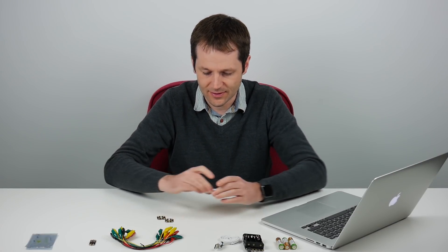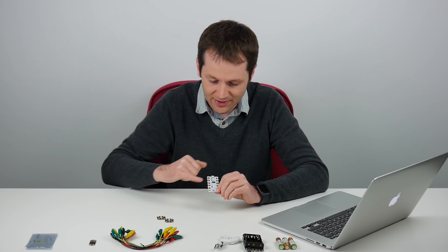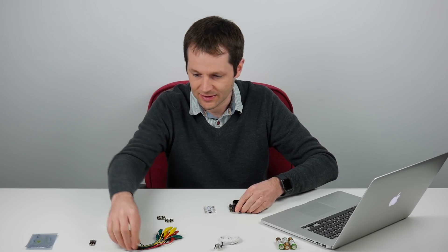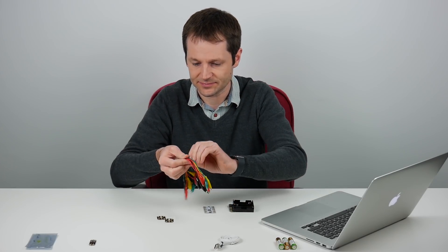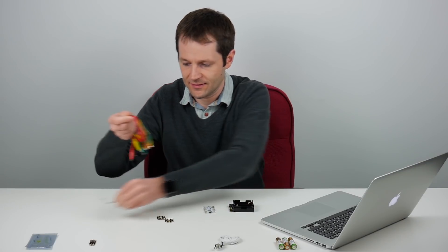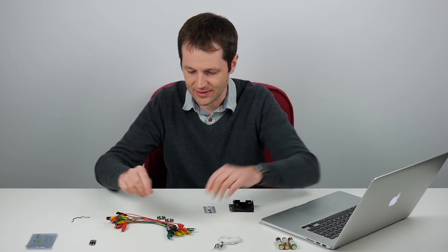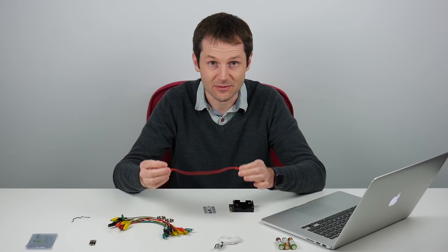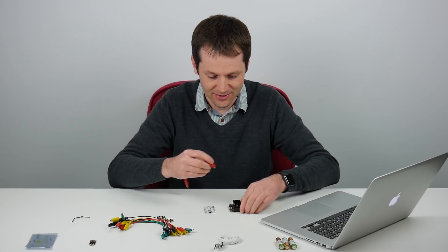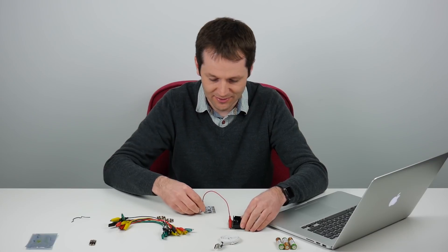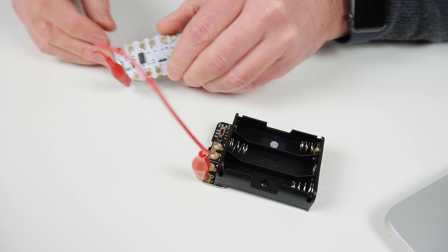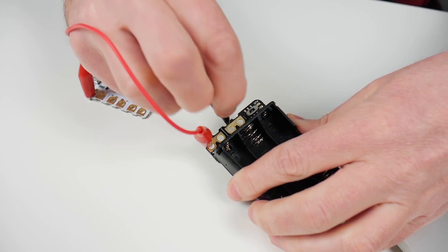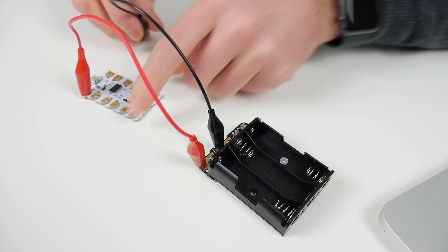To power the Crumble we need to connect the battery pack to the plus and minus on top of the Crumble. I'm going to take my battery pack and some croc leads and connect them. Conventionally we try to use red wires for plus and black wires for minus. So I'm going to connect a red wire from plus on the battery pack to plus on the Crumble and a black wire from minus on the battery pack to minus on the Crumble.